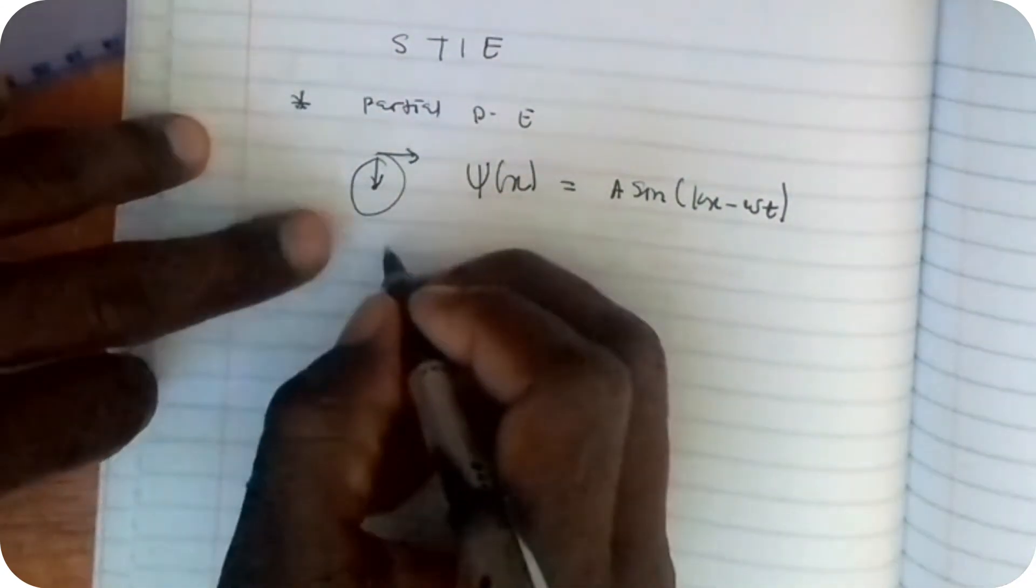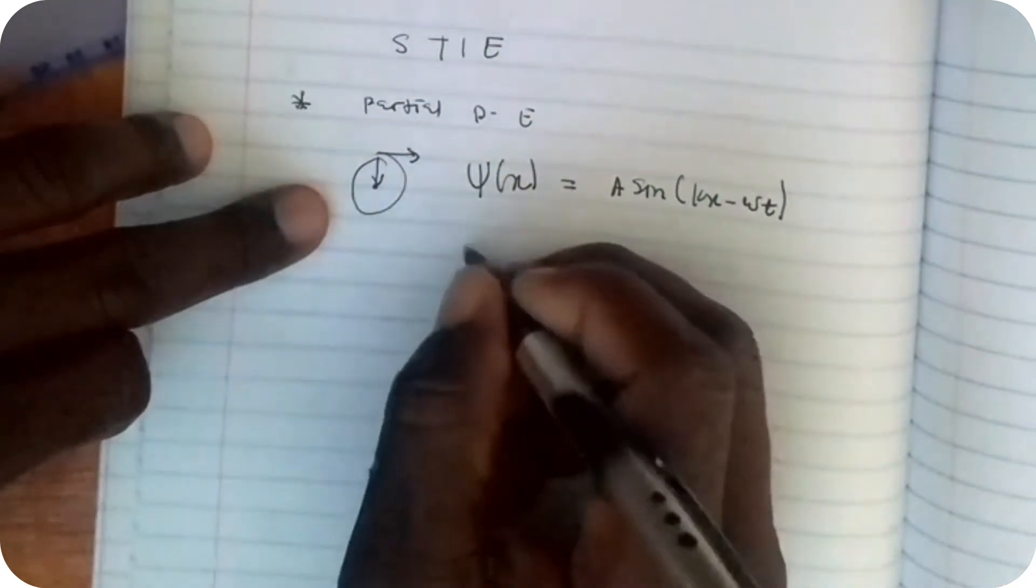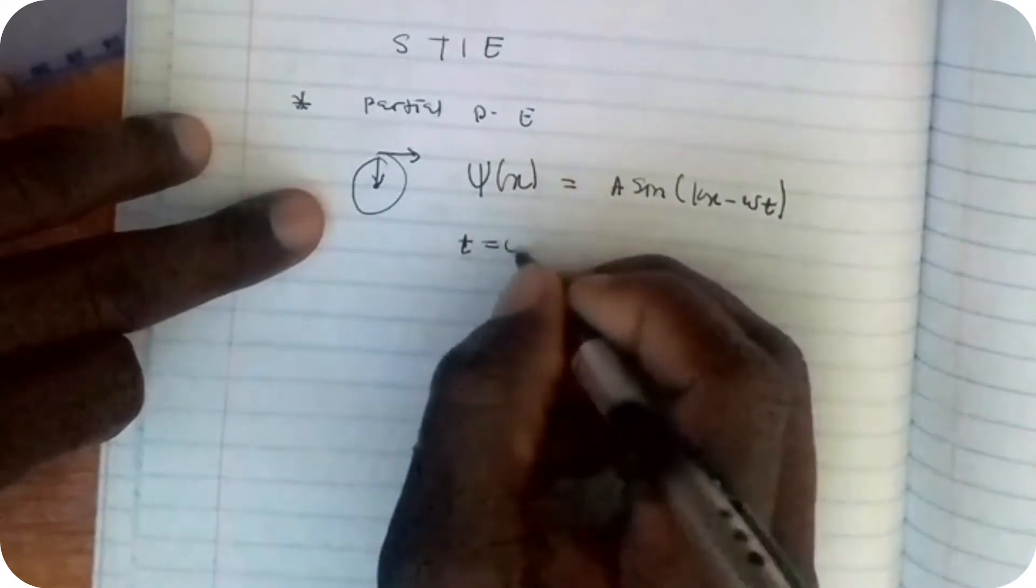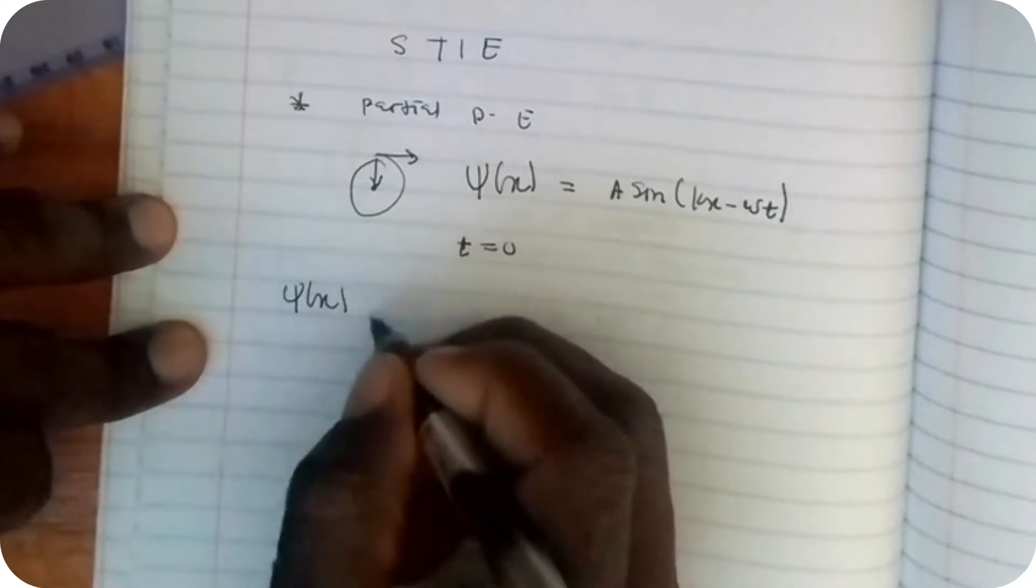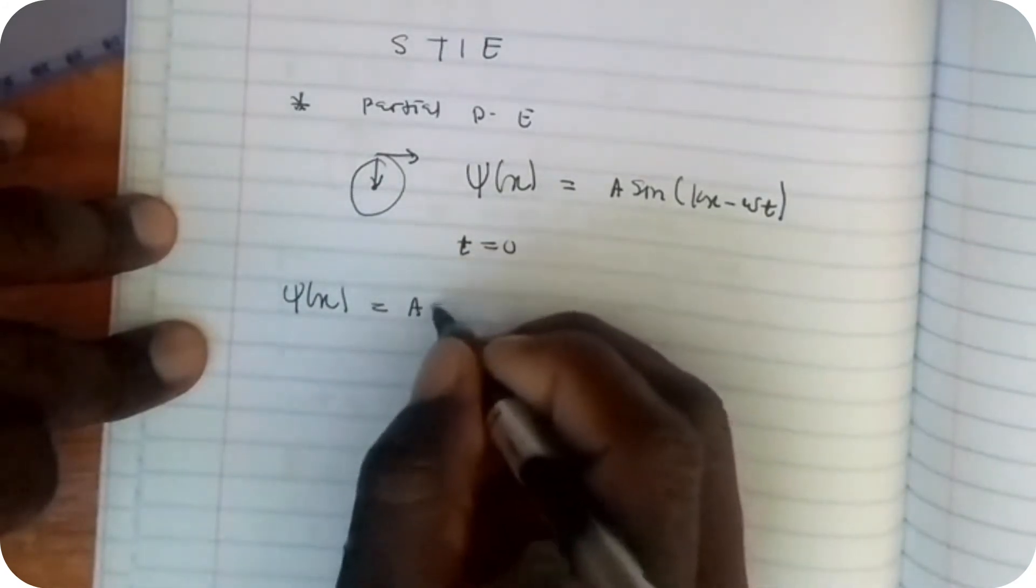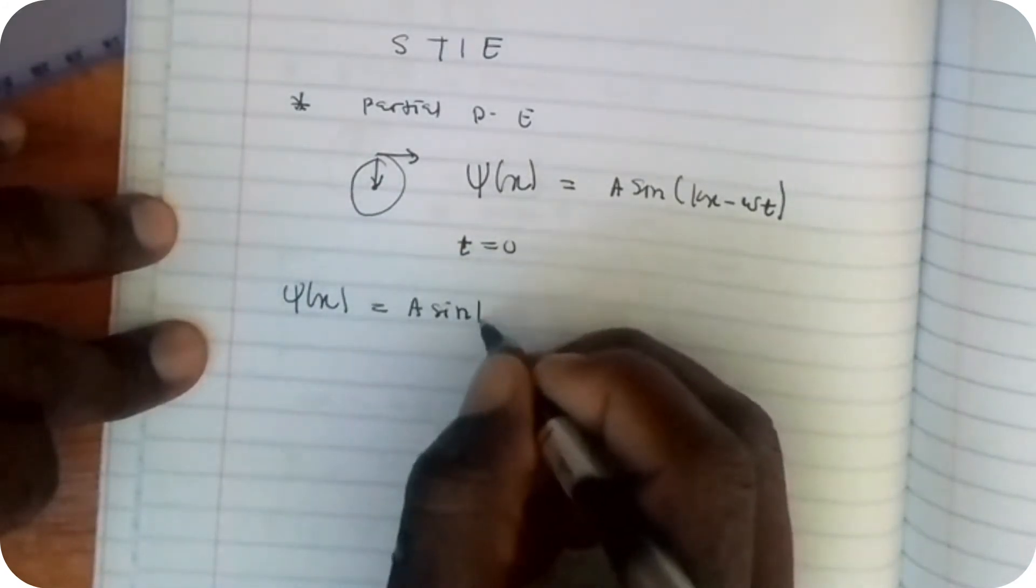Since the Schrödinger equation is independent of time, t equals 0. We have ψ(x) which is equal to A sin(kx).